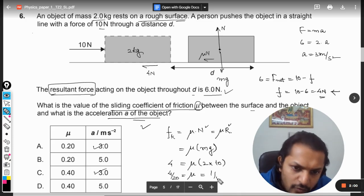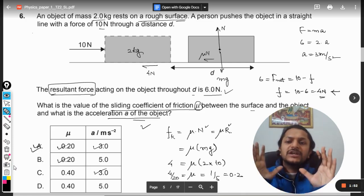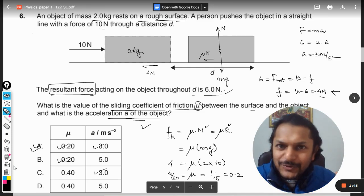So it is 1 by 5, which will be 0.2. So our answer is 0.2. Yes, so my options are matching here. So the answer is A.